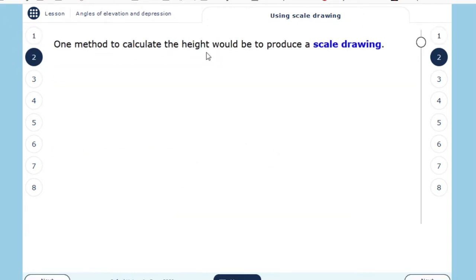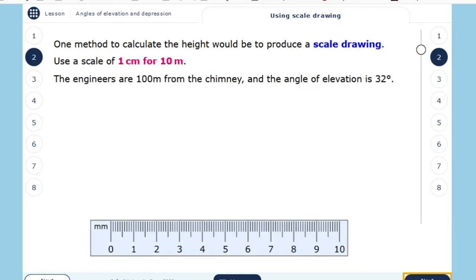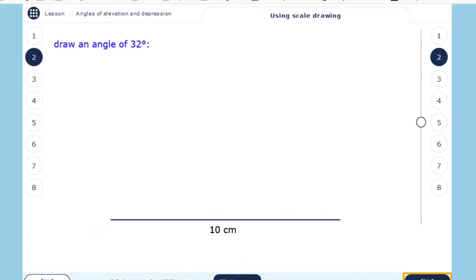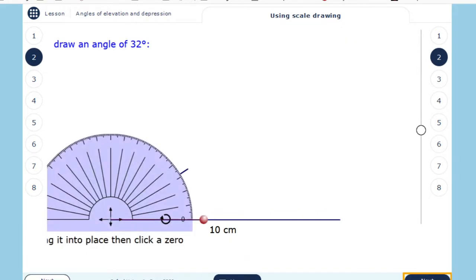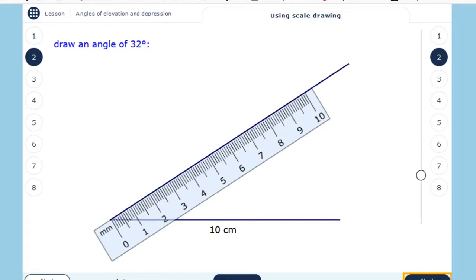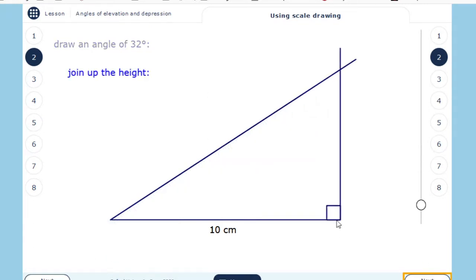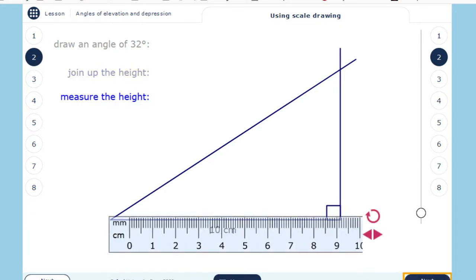Now one method to calculate the height would be to produce a scale drawing. Use a scale of 1 cm for 10 meters. The engineers are 100 meters from the chimney and the angle of elevation is 32. I draw a line 10 centimeters long. I draw the angle of 32 degrees. I'll join up the height. Measure the height. You should find it's 6.3 centimeters.